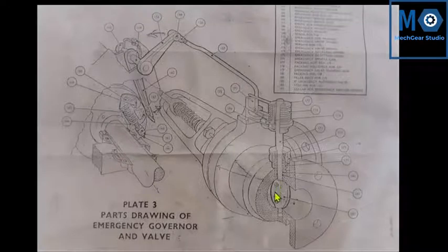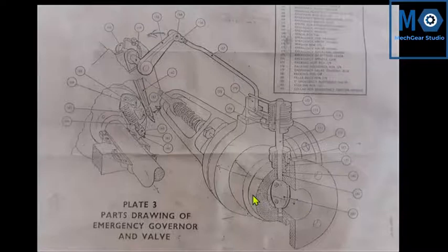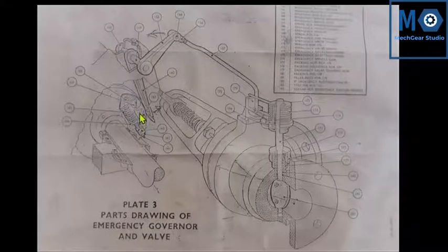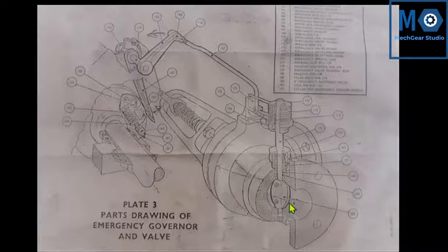In normal condition, this disc is similar to the throttle body of the carburetor — this disc always remains parallel so flow can take place easily. But when the emergency governor is operated, this disc comes to the perpendicular direction, so we can totally stop the steam flow. This disc is nearly the diameter of this pipe, so the emergency governor operates beyond some emergency RPM — when it operates, it will stop completely the steam supply.